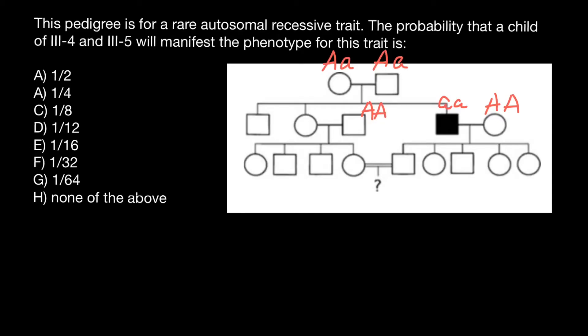What can we say about the genotypes of the children of this couple? From the mother's side they can only get the dominant allele, and from the father's side they can only get the recessive allele. So we know for sure that this person — the father, III-4 — is an obligate heterozygous, and the probability is 100% or 1.